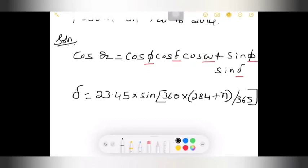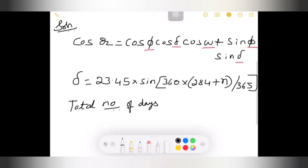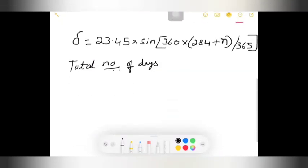This is the formula for delta. In this formula, n is unknown. Other things can be easily determined. Only n is unknown to determine my delta. Here, the total number of days n is nothing but the total number of days.